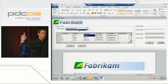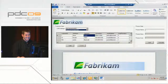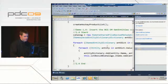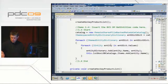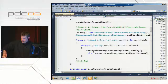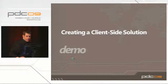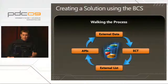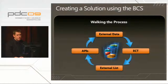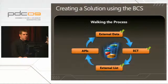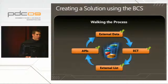To wrap up and bring it all together: we've walked the full process — external data, ECT, external list, offlining that list, and two examples of APIs. One API is native to BCS (the new 2010 API), one is the client object model — more generic to SharePoint. Both allow you to interact with the external data source in different ways.